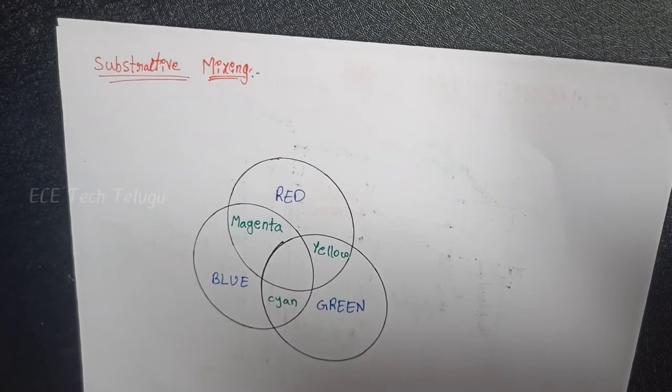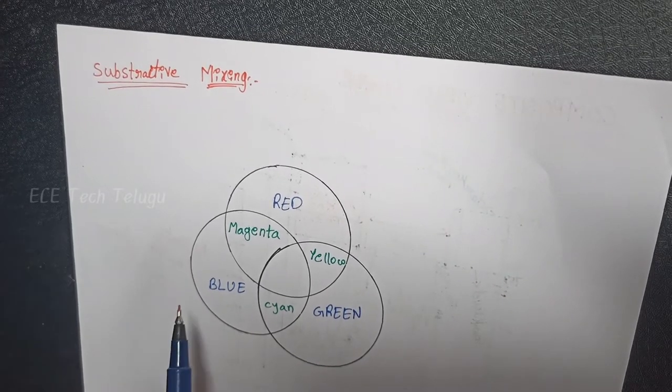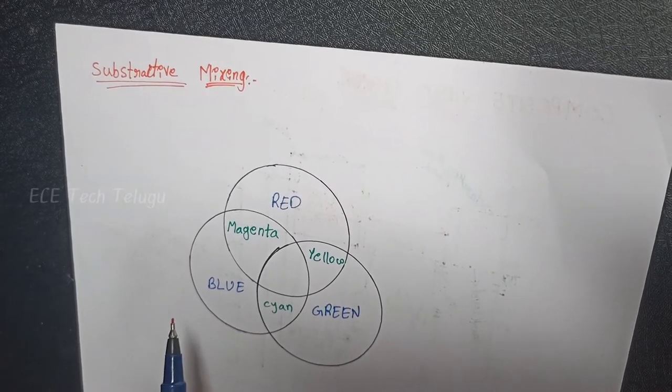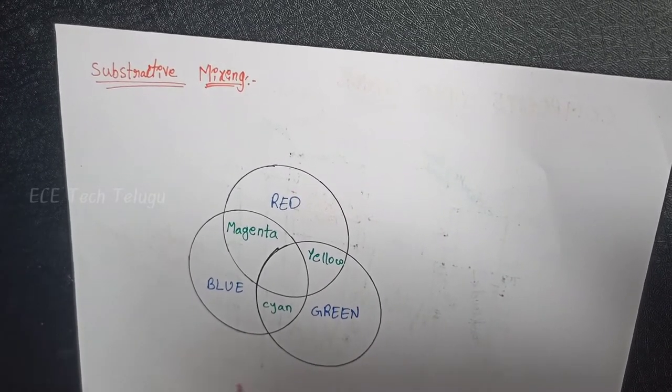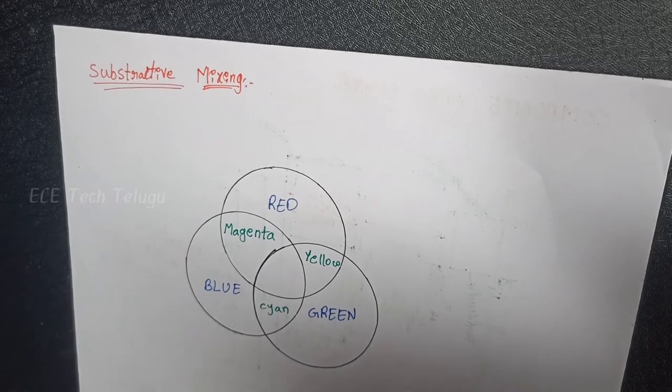First, subtractive mixing. Subtractive mixing means: select the required color and reflect back the rest of the colors.